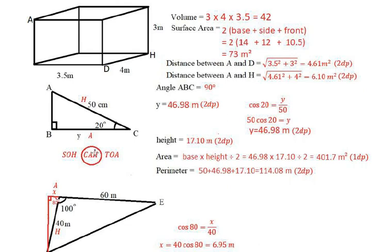So we have A and H. When you have A and H, it fits in with CAH. The C stands for COS. So what I've written down is: COS of the angle, which is 20 degrees, equals A over H. Now A was Y, so instead of A we write Y, and the hypotenuse H is 50. Rearranging — move the 50 across — you get 50 COS 20. You can just type 50 COS 20 on your calculator, and that gives you the Y value of 46.98 to 2 d.p. You could make it 1 d.p. if you wanted to.